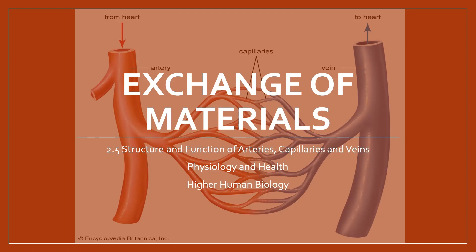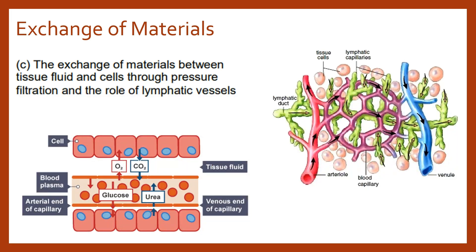In this video we're going to look at the exchange of materials that takes place between the blood and the body tissues, all happening within the capillary network. The site of exchange of materials — nutrients like oxygen and glucose — leave the blood and enter into the body cells, while the body cells get rid of their waste products such as urea and carbon dioxide, which ultimately enter into the blood plasma.